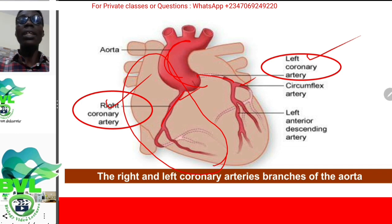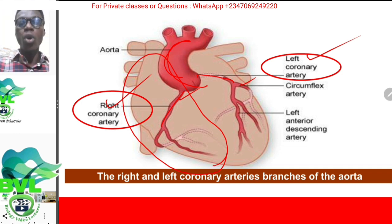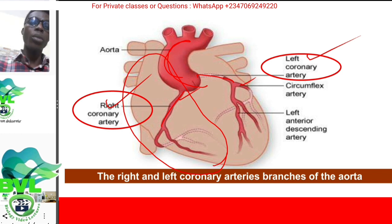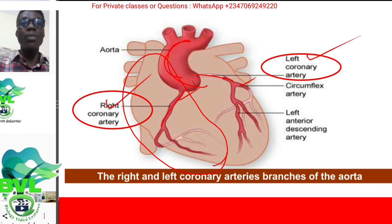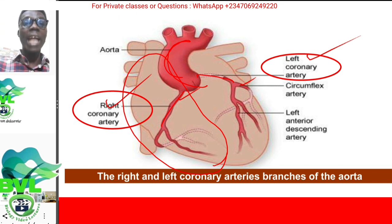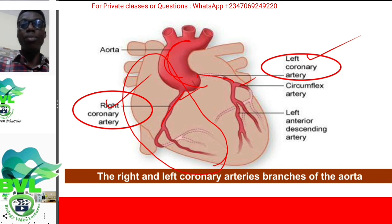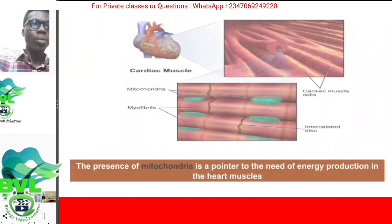Also, we have coronary veins. I only used coronary arteries here for the moment, but we have coronary veins. The coronary veins are the ones that take away the deoxygenated blood and add it to the veins returning back to the heart.